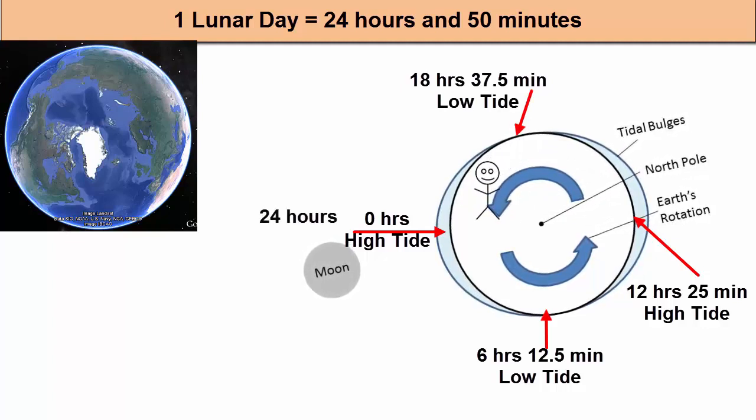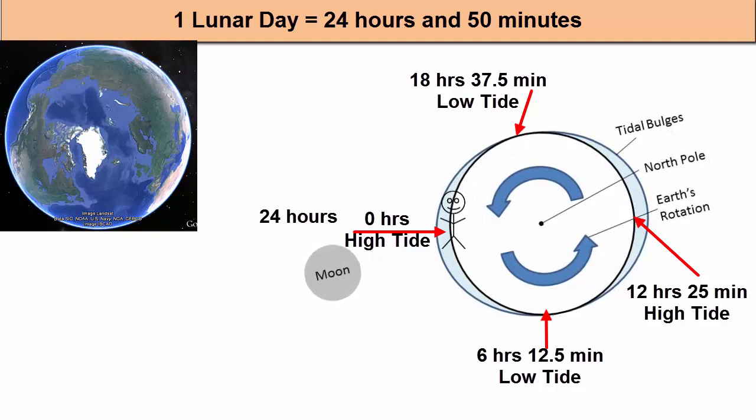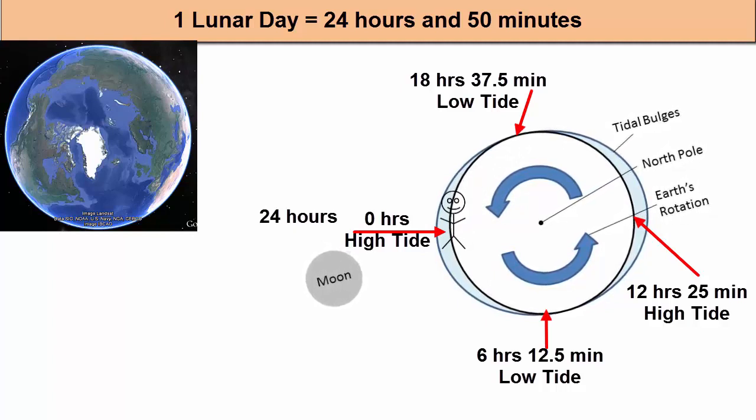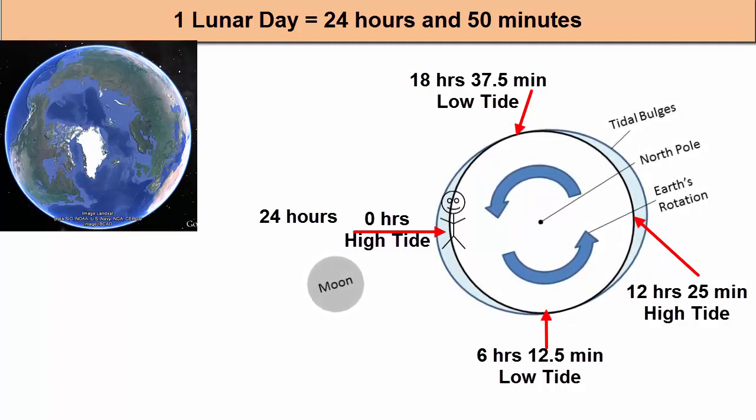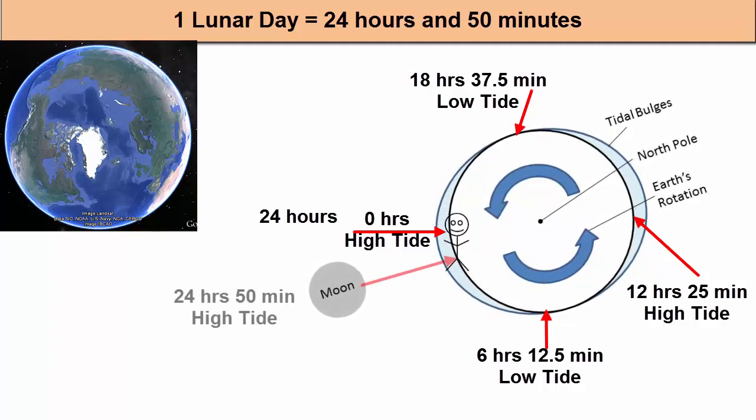18 hours and 37.5 minutes later, the figure has left the high tide and is experiencing low tide again. 24 hours later, the figure is back where it started relative to the Sun. But the Moon has been moving during Earth's rotation. The Moon has moved 1/29th of its full orbit. The bulges have moved with it. So the figure needs to rotate another 50 minutes to meet back up with the bulge.